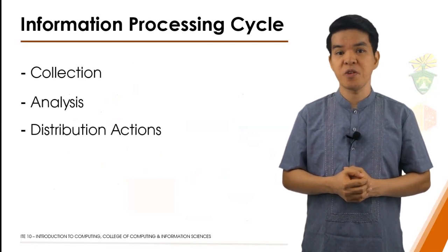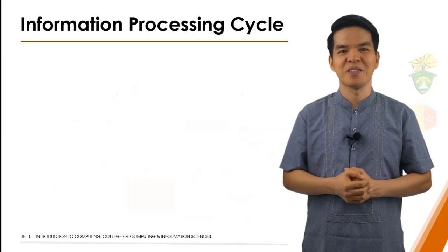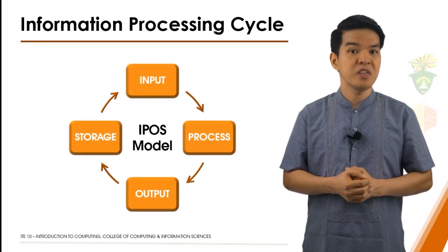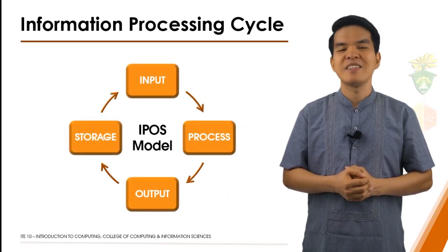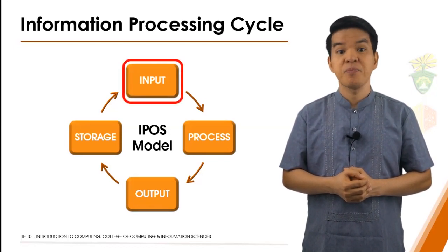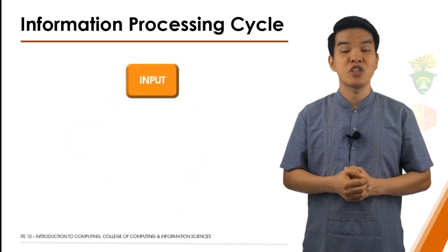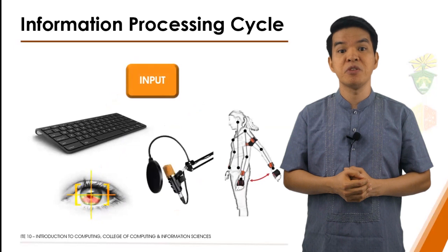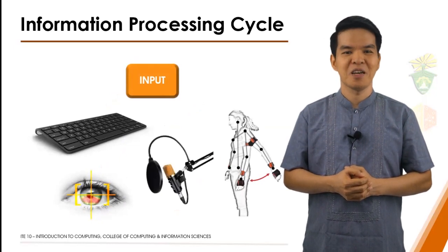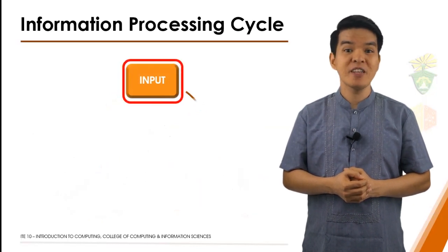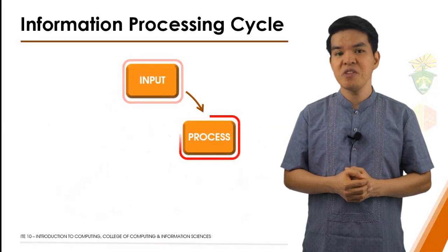How does this model work? Before data can be translated into either stored data or information output, it must first enter the system. The general view of the input stage is that some sort of input device is used to enter data into the system — such as a keyboard, microphone, or perhaps even the movement of eyes or another body part, and many more. Once data enters the IPOS model, it is processed into either stored data or information.